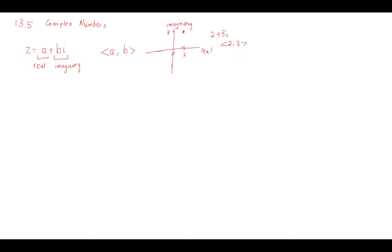We can kind of think of this as a vector too. So if I had a vector going towards it, I can make my right triangle with it, and I can come up with a few new ideas about complex numbers.